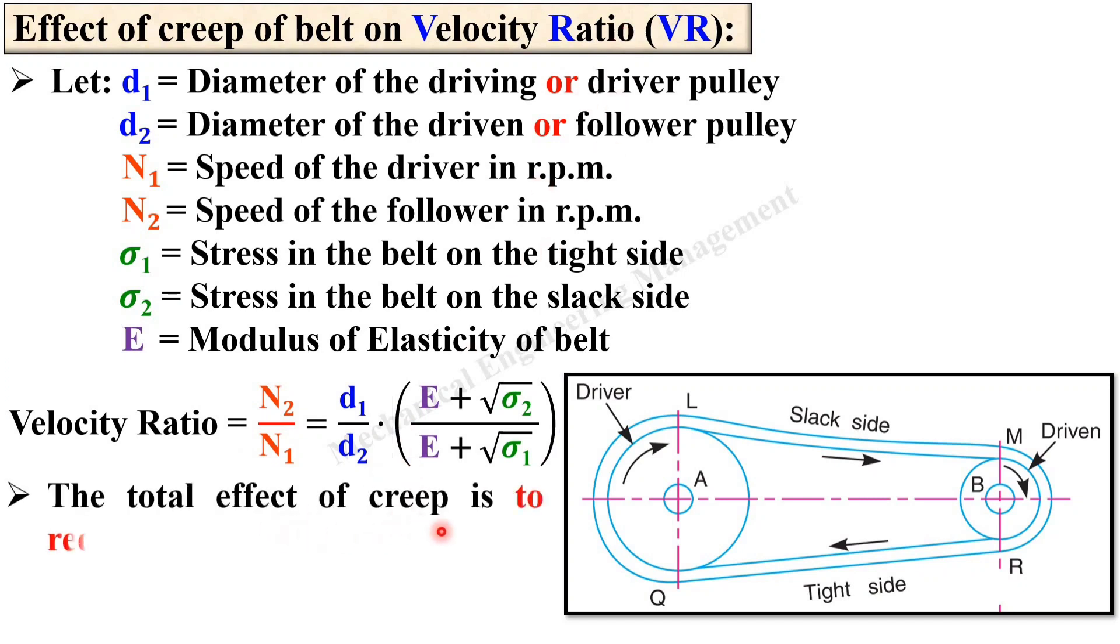The total effect of this creep is to reduce slightly the speed of the driven pulley or follower and that depends on the value of sigma 2 and sigma 1. If there is very little difference between sigma 1 and sigma 2 then it will be ignored but if there is a significant change in the value of sigma 1 and sigma 2 then you have to consider the effect of the creep on velocity ratio.